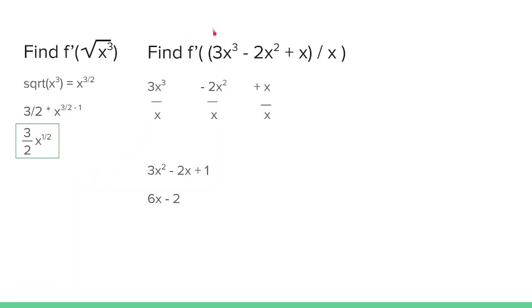For the next problem, which is 3x cubed minus 2x squared plus x all over x, you can divide each term by x. So you have 3x cubed over x, negative 2x squared over x, plus x over x. Each one cancels one of the x's, so you get 3x squared minus 2x plus 1.